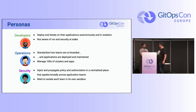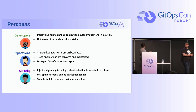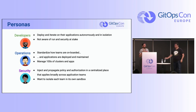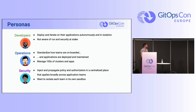In our use case, we have three personas: developer teams, operation teams, and security teams. Every team has their own focuses. Developers want to ship features faster, fix bugs, and be autonomous in isolation — but they don't have operations or security in mind.